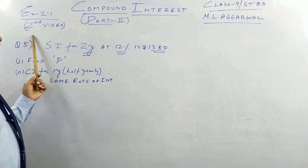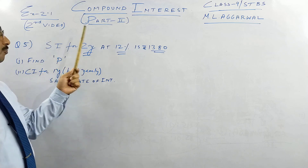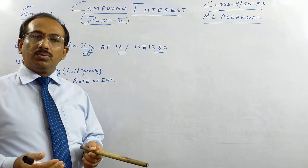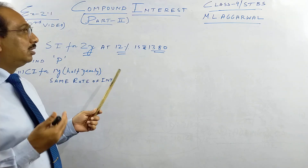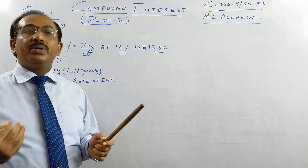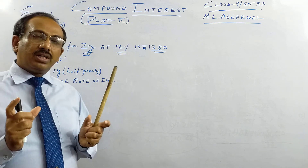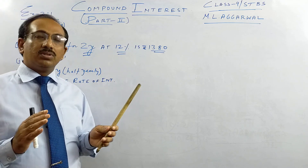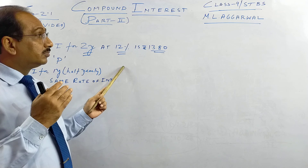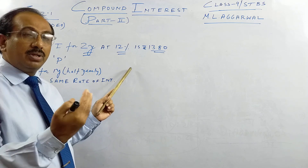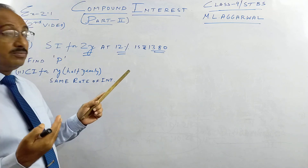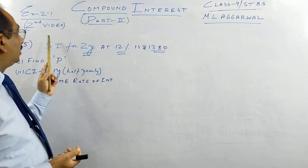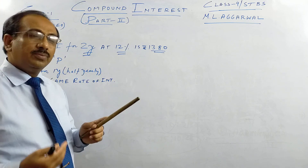Children, we move on to the second video of my lesson on compound interest. As you have seen in part one, we are doing compound interest as repeated simple interest — without formula. We will use the formula in Exercise 2.2. This common sense method is sometimes easier than the formula, because the formula comes from the logic of this chapter. I will do a couple of slightly difficult questions, then move on to harder sums before we move to the formula.